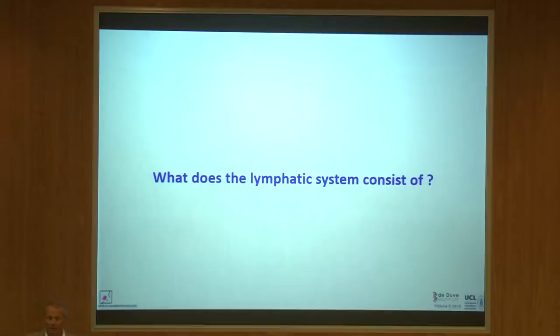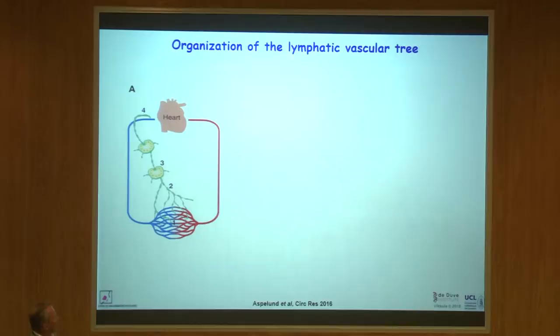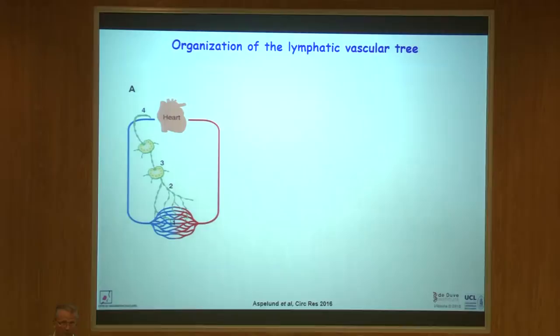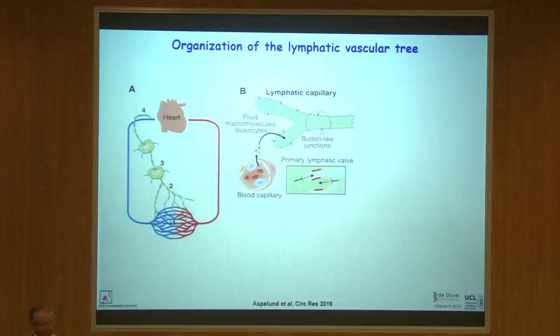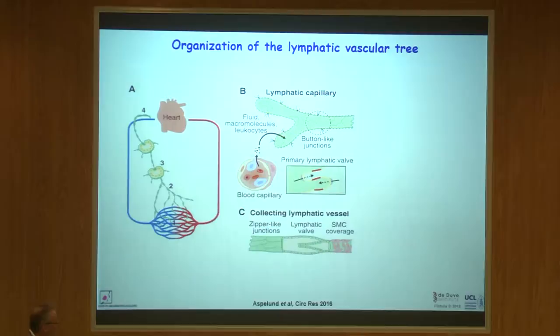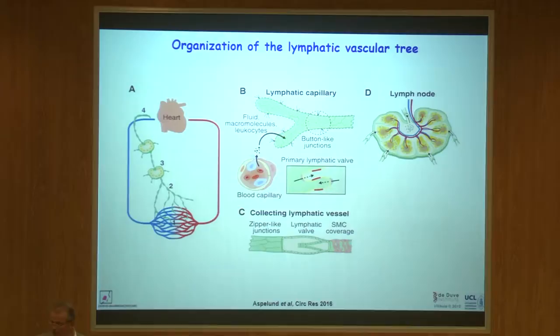What does the lymphatic system consist of? We have the vascular system — the heart and whole vascular system, red in the arteries, blue in veins. In addition, we have the system shown in green, which is the lymphatic system. That system starts at the periphery of the body from lymphatic capillaries — that's the beginning, where lymph is taken up and then flows into bigger and bigger collecting lymphatic vessels. The lymph then passes through the lymph nodes.